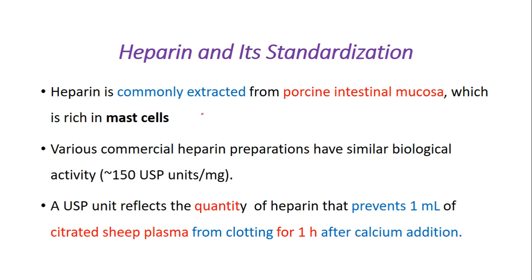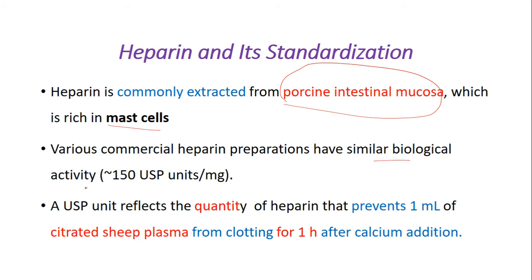Heparin is commonly extracted from the porcine intestinal mucosa, which has a rich population of mast cells. Various commercial preparations of heparin are now derived from recombinant technologies, which have similar biological activities.